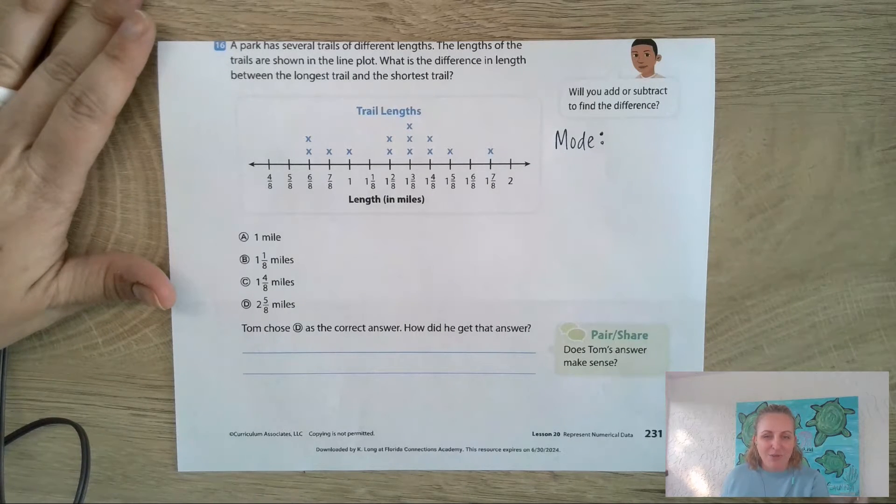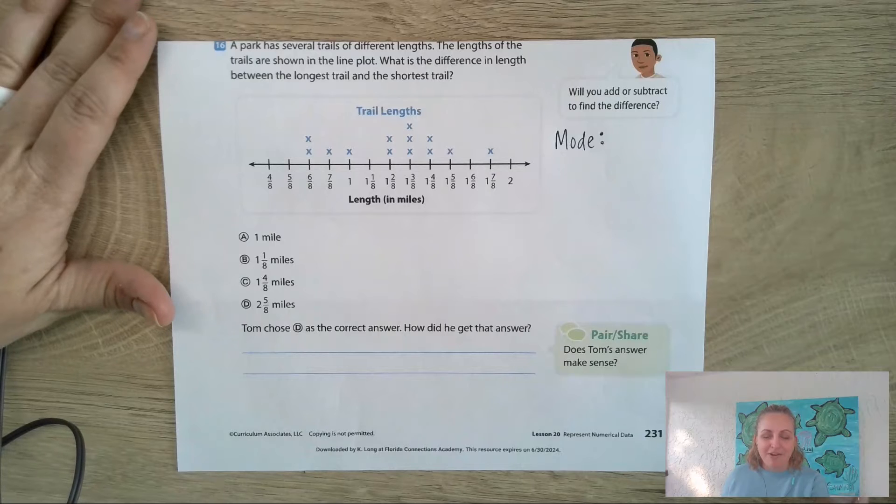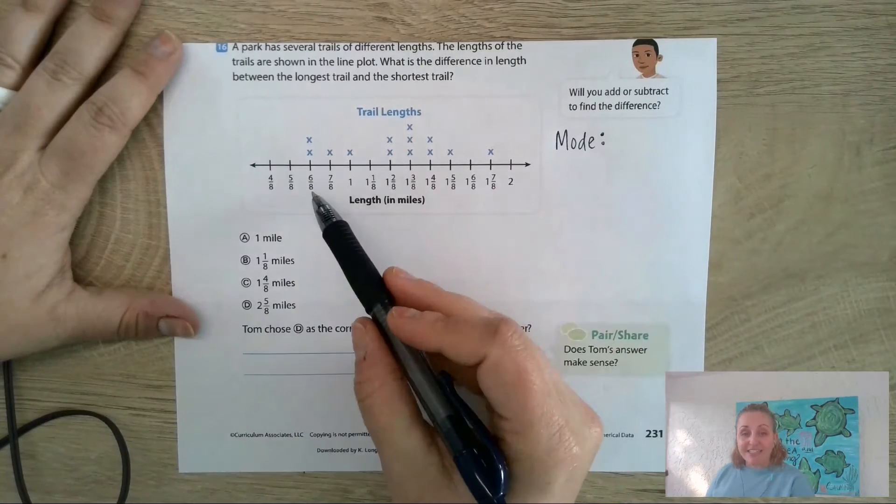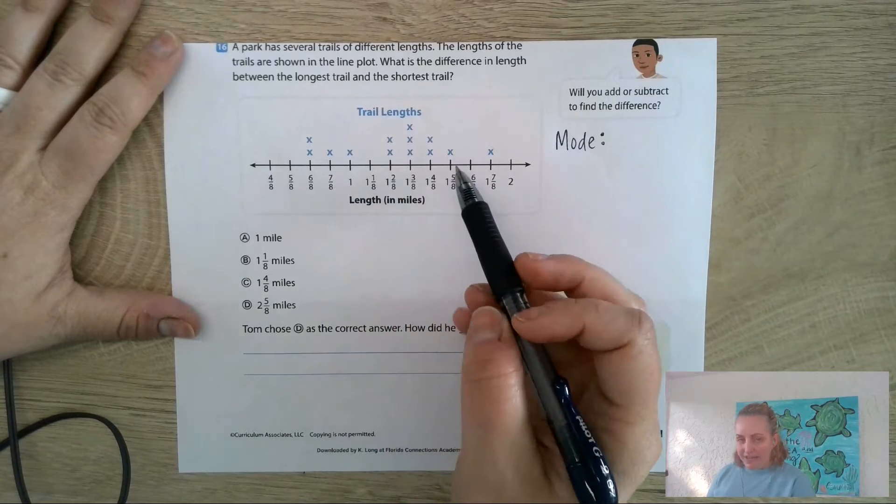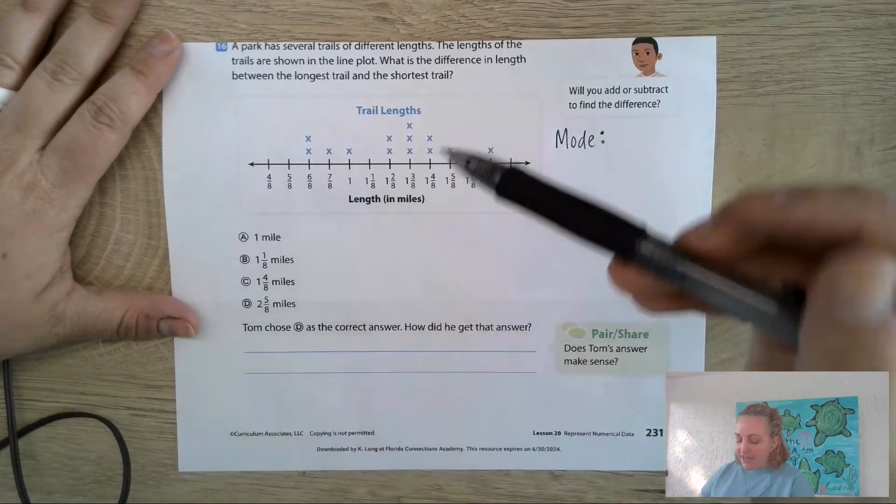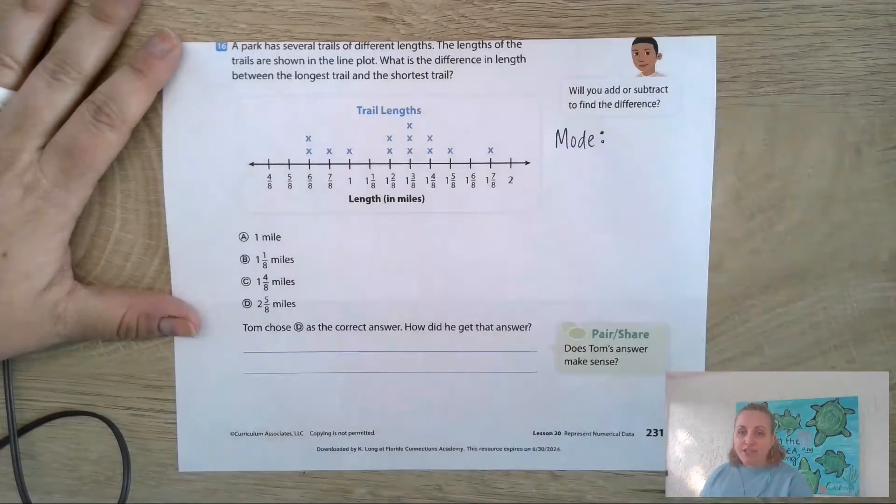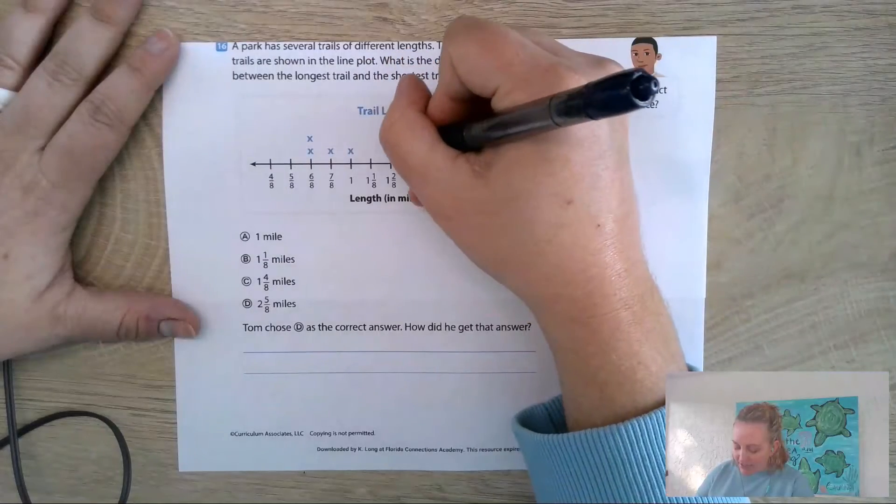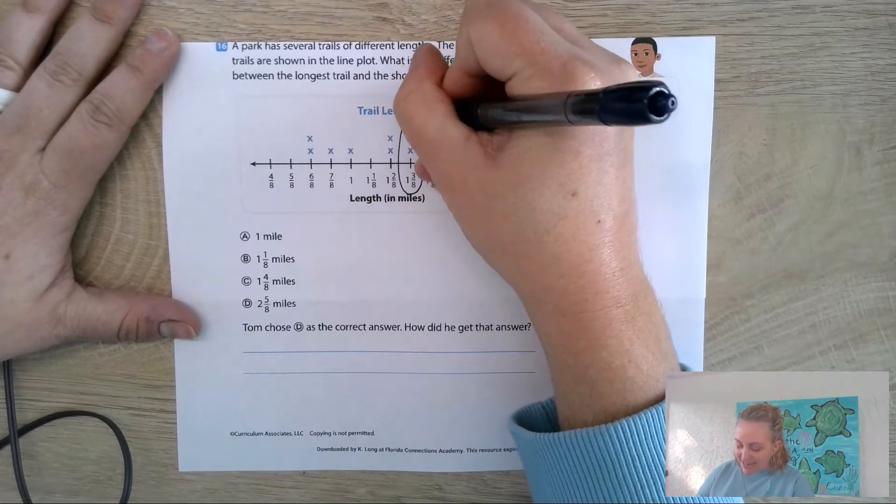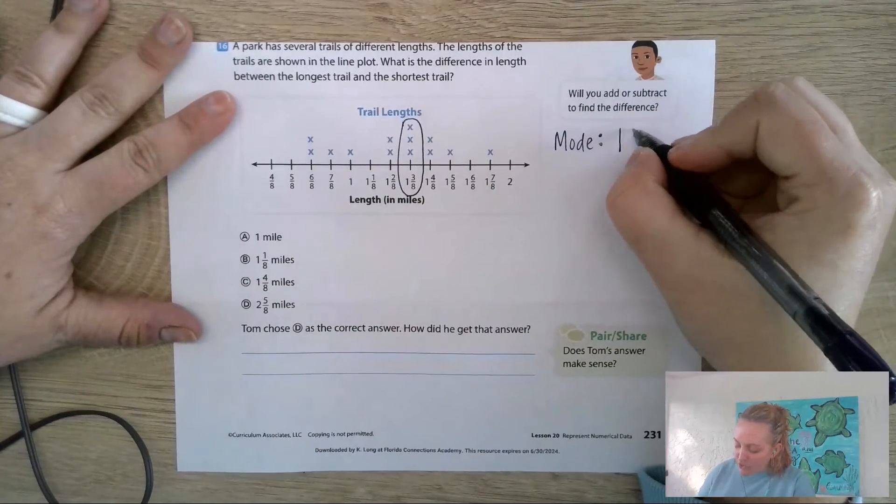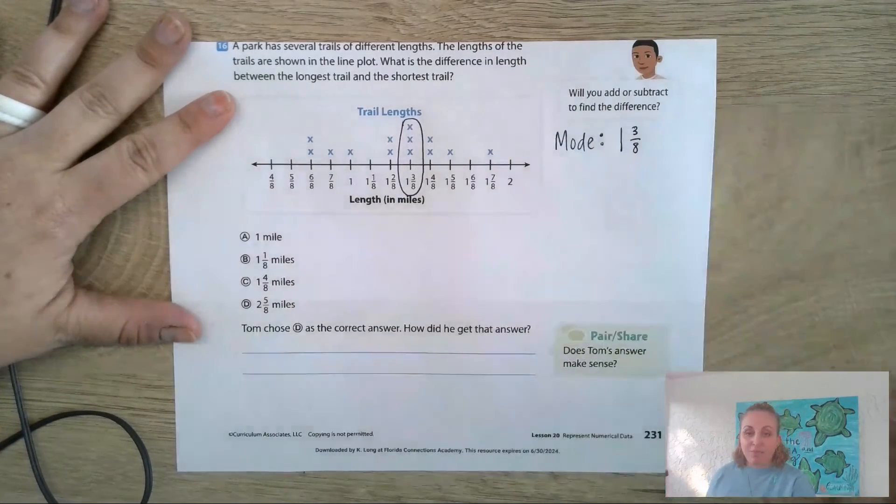First of all, the mode should be pretty easy to find. I want you to pause your video and see if you can figure out how to find the mode on the line plot. You should have immediately looked at the X's to see which column has the most X's, because the mode is the most.